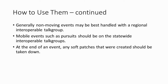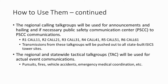To summarize, non-mobile static events are likely best handled with a regional interoperable tactical talk group. Mobile events like pursuits should be handled with the statewide interoperable tactical talk groups. At the end of any interoperable event, it is important to remember that any soft patches that were created should be taken down. This helps ensure that these resources are available for other users. The regional calling talk groups will be used for announcements, hailing, making first contact, and even communication center to communication center transmissions. These talk groups are configured so that end users should be able to scan them in the field.